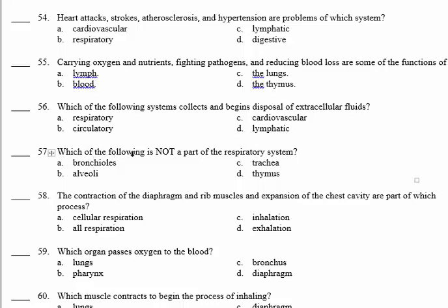Number 57: which of the following is not part of the respiratory system? Bronchioles, alveoli, and trachea are part of the respiratory system. So the answer is thymus. Thymus is a gland that is part of the lymphatic, not the respiratory system.